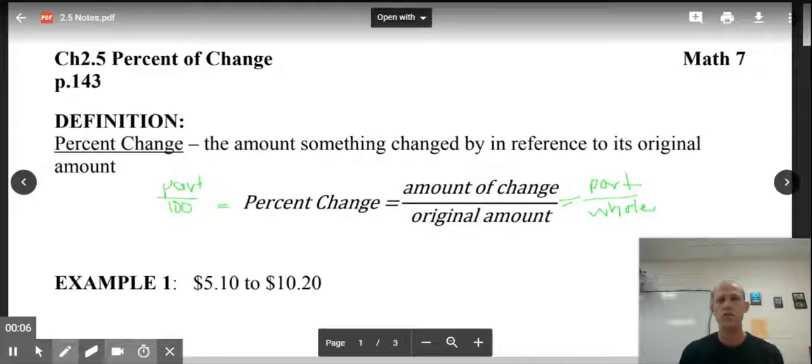Percent change deals with an original amount and what that amount went to or became. It can talk about how much something was discounted, how something was marked up, but it compares it to the original value. And it's just a way to look at things from a different perspective. So what percent change is, is you take the amount of change divided by the original.